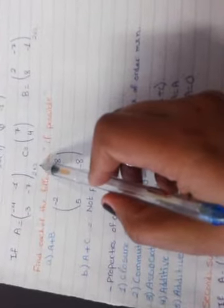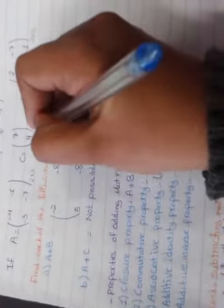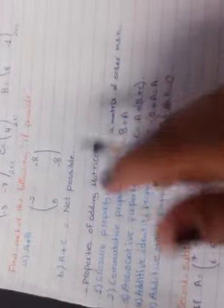Part B, A plus C. Look at A, 2 times 2. Look at C, it's 2 times 1. Can you add it? No you cannot, so it is not possible.